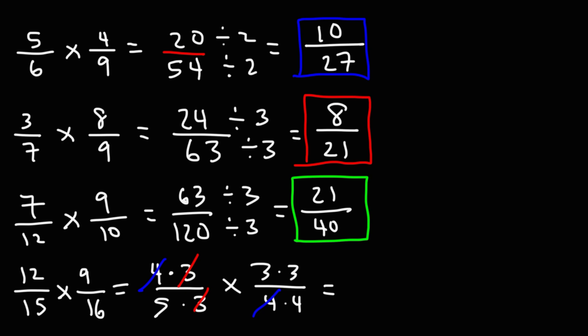You can only cancel two numbers where one number is on top of the fraction and the other number is in the bottom of the fraction. You can't cancel these two. They're multiplied. You can cancel these two because one is in the top of the fraction and the other is on the bottom. Now, let's finish the problem. 3 times 3 is 9. 5 times 4 is 20. And notice that our answer is already reduced. We don't have to reduce it any further.